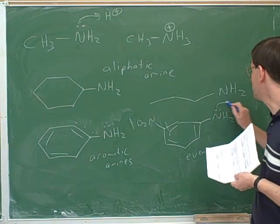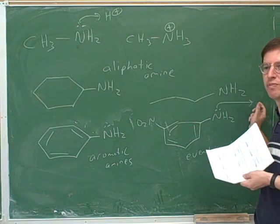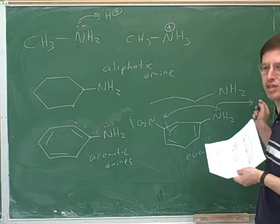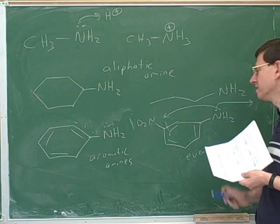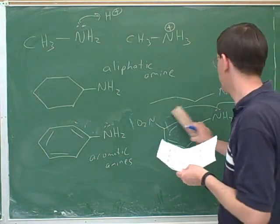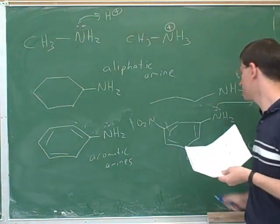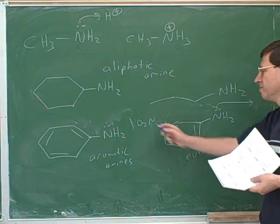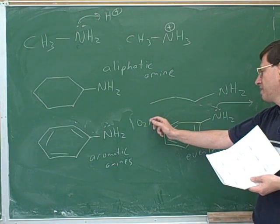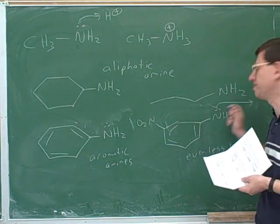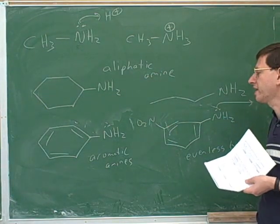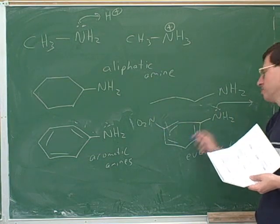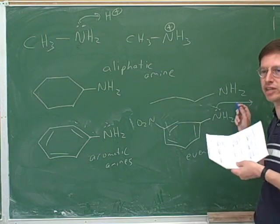Remember that a base is somebody who donates electrons to a completely different molecule. But if the electrons are getting pulled towards the nitro group, they're not going to be donated to a completely different molecule. Electron withdrawing groups make compounds less basic — this nitro group wants to keep the electrons in the molecule and doesn't want them to be donated to a different molecule. An electron donating group would make this more basic by trying to push the electrons off.